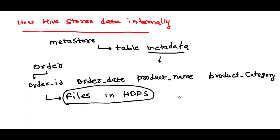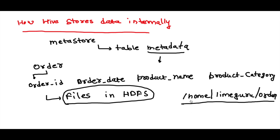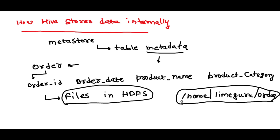Your files can be on any path, and the path reference is given in the metastore for your table. Whenever you query the order table, the metastore tells you that this order table references a particular location in HDFS, goes to that location, and fetches the data. For example, the path might be something like /home/limeguru/order — this is the path in HDFS containing all data related to your orders.